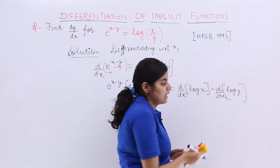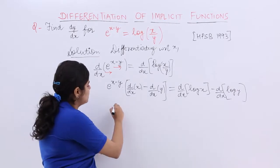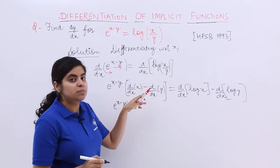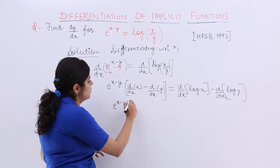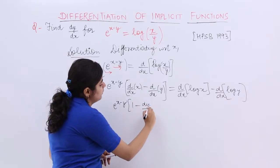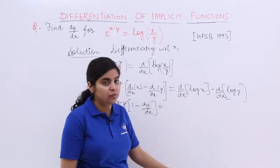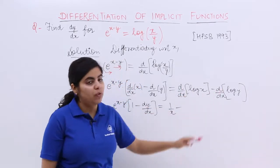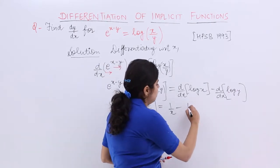So, e raised to the power x minus y remains as is. Differentiating x with respect to x gives 1, minus this becomes dy/dx. On the right-hand side: what is the differentiation of log x with respect to x? It is 1 by x. Minus — what is the differentiation of log y with respect to x? It is 1 by y.